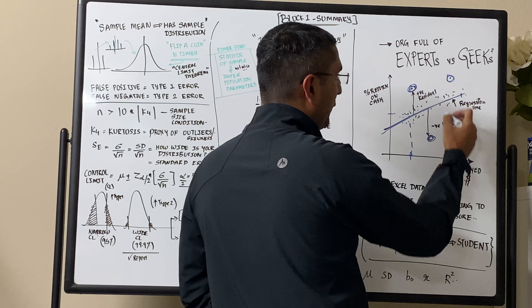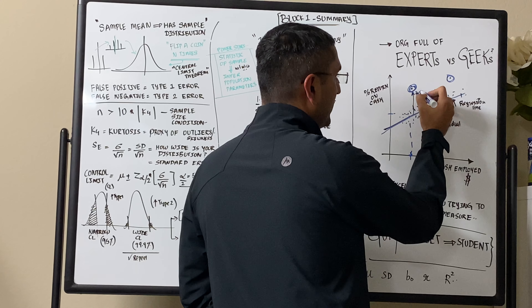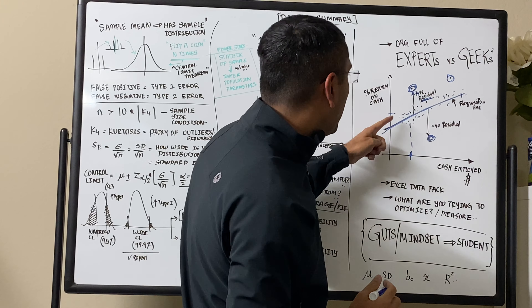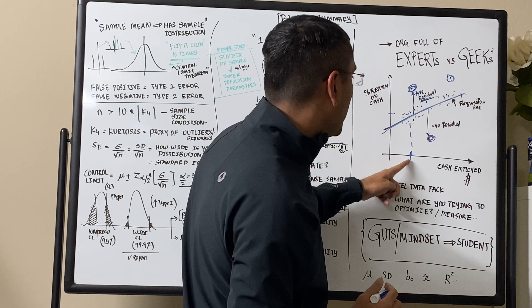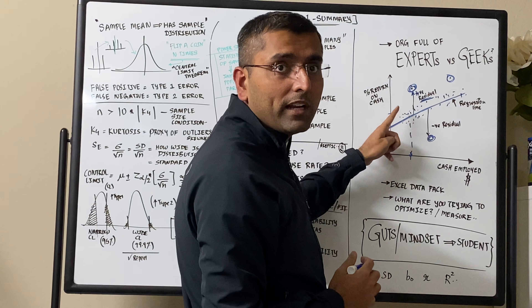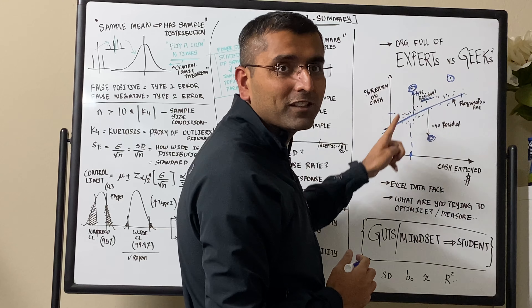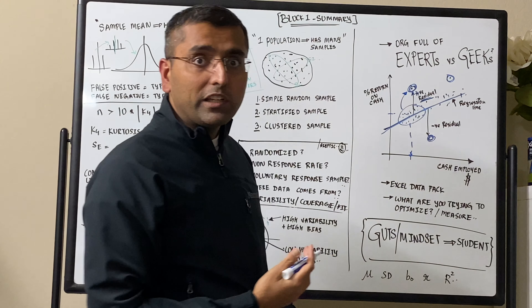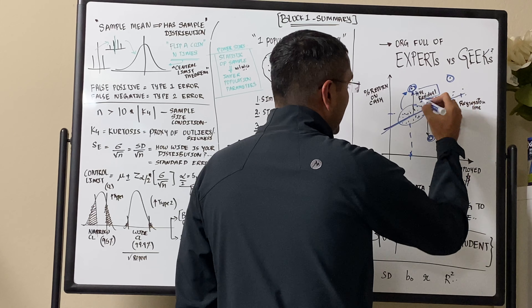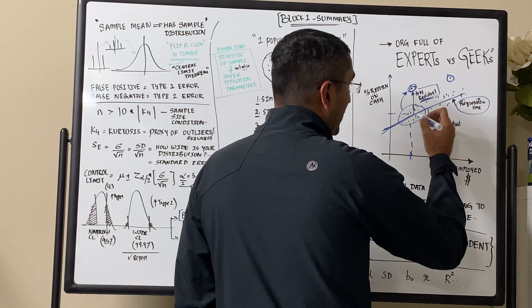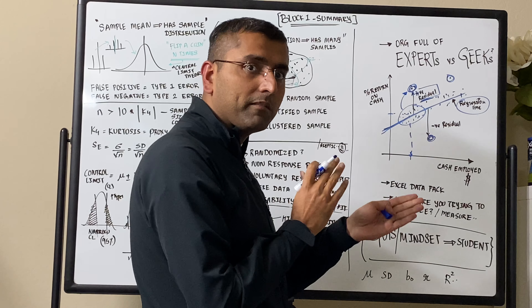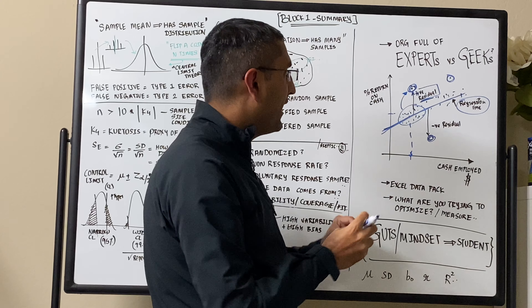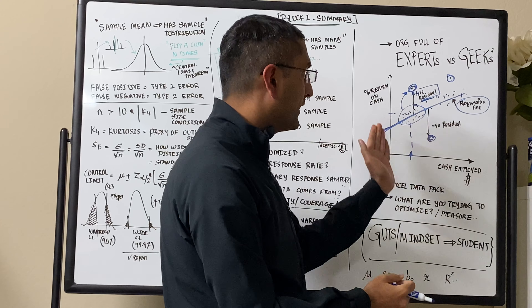These outliers are what you're really looking for. A positive residual means that most companies are around a certain space, but this company has somehow figured out how to give you more return for the same amount of cash — it's doing way better. We can find out which company is able to do better for the same amount of cash. That company has a positive residual on this regression line, which you can easily plot using the Data Analysis ToolPak in Microsoft Excel, and within seconds generate a linear regression graph.